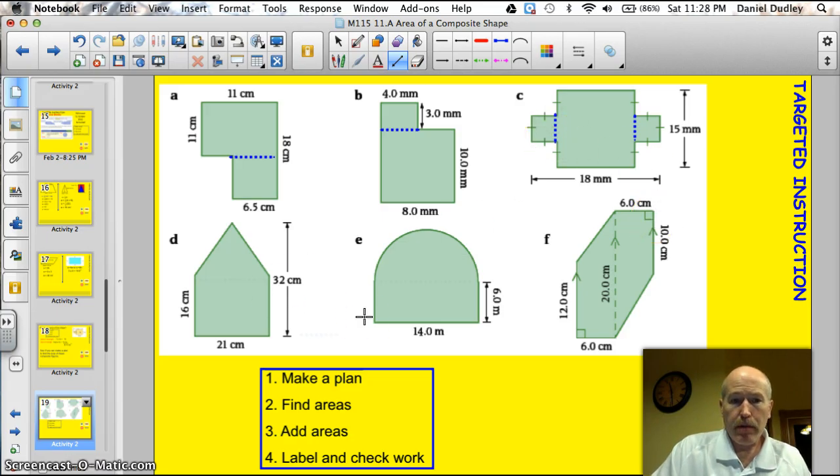How would you find the shape or the area of shape D? I would break it into a triangle and a square. Find the area of each, add them together.